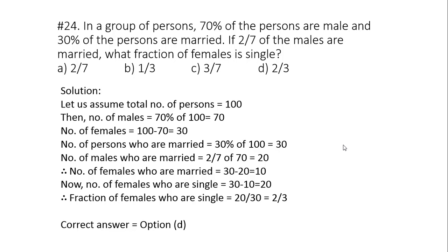Last question. Question number 24. In a group of persons, 70% of the persons are male and 30% of the persons are married. If 2 by 7 of the males are married, what fraction of females is single? So in order to solve this question easily, let us assume the total number of persons as 100. Then according to question number of males will be 70% of 100. So that is 70. Number of females will be 100 minus 70. That is 30. Number of persons who are married will be 30% of 100. That is 30. Number of males who are married will be 2 by 7 of 70 that is 20.